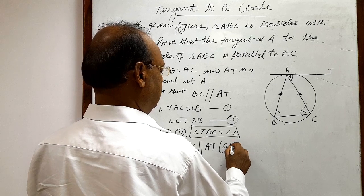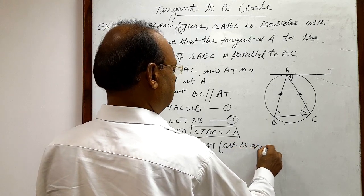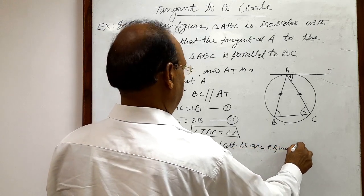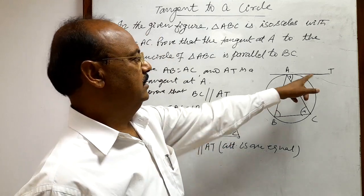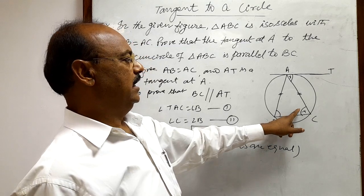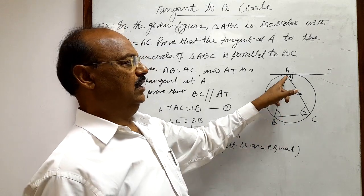BC is parallel to AT. What is the reason? Since alternate angles are equal, which alternate angles? Angle TAC,